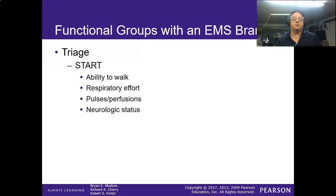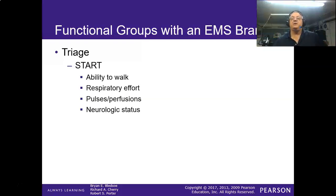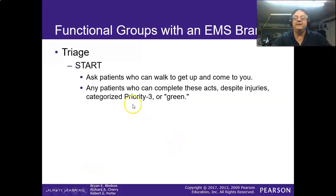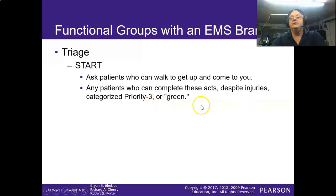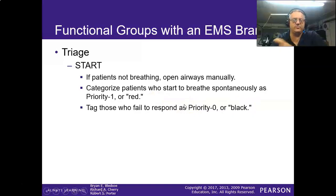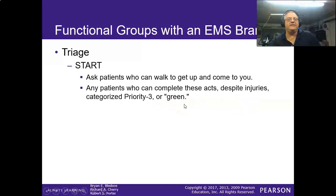They have good respiratory effort, their pulses are good, they have neurologic status. We quickly check those on every patient, tie a green ribbon around them and keep going. These are anybody that can do all these things despite injuries — they're green. If they can walk and come to you, they're green, unless we see something dramatic — like if they're green but they're breathing 45 times a minute, I might put the red tag on them.